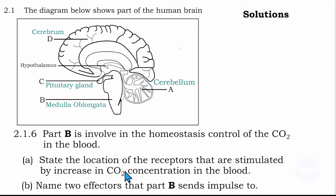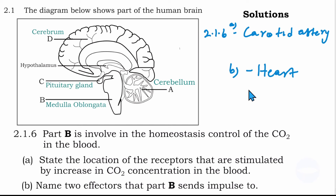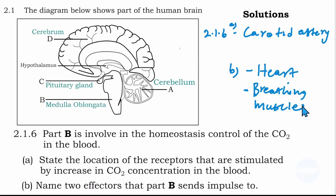The receptors are called chemoreceptors, and their location is the carotid artery. The next part asks: name two effectors that part B sends impulses to. The effectors that the medulla oblongata sends impulses to in order to reduce carbon dioxide levels are: first, the heart — it pumps faster so more blood circulates and more carbon dioxide leaves the body. Second, the breathing muscles — the diaphragm and rib muscles — they contract more to increase breathing rate.